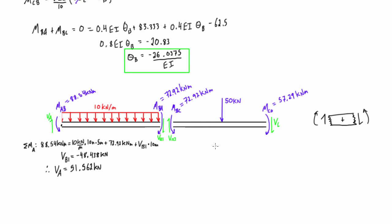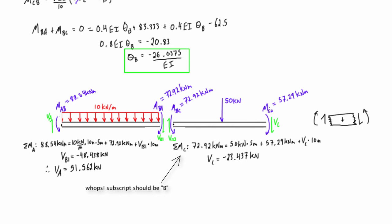For the second beam, we take the sum of moments about point B and find VC equals negative 23.437 kilonewtons, so it actually acts upward. Taking the sum of forces in the y-direction — 50 minus 23.437 — we find VB2 is positive 26.563 kilonewtons in the assumed direction. We've now solved all the required math: internal bending moments and shears at each end of the spans. In the next video, we'll draw the shear force and bending moment diagrams and label the reactions at A, B, and C.